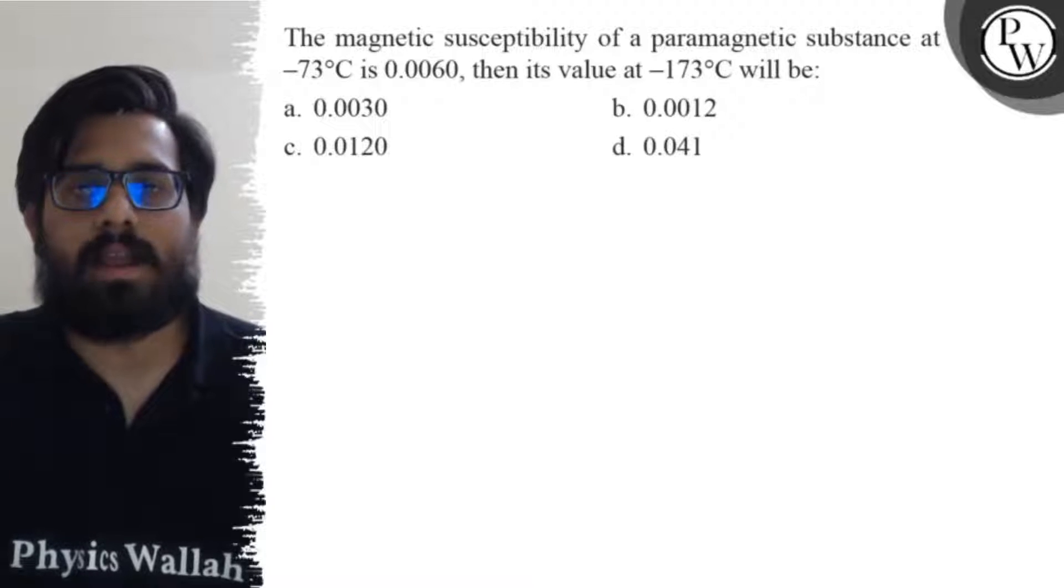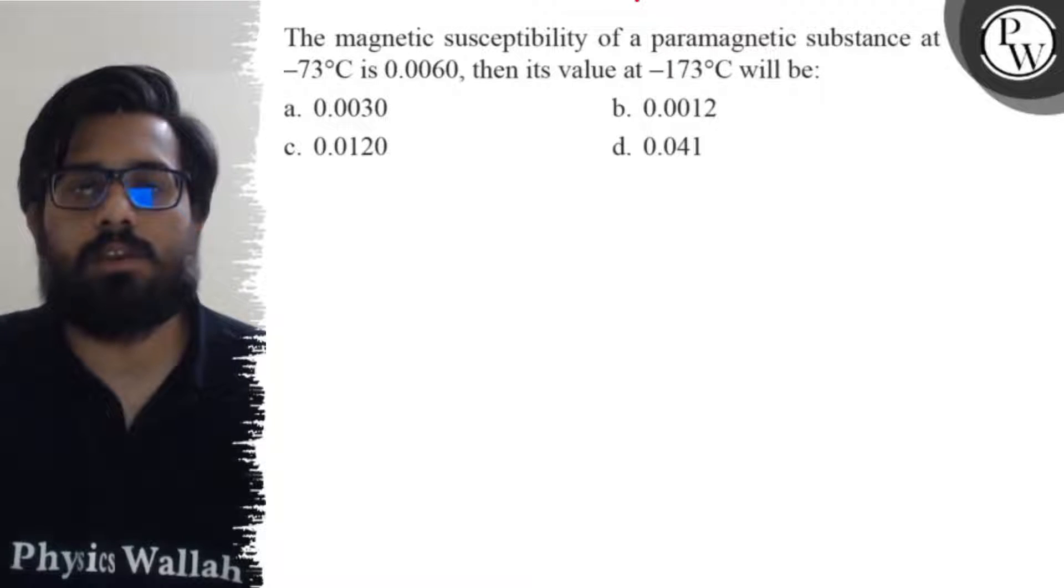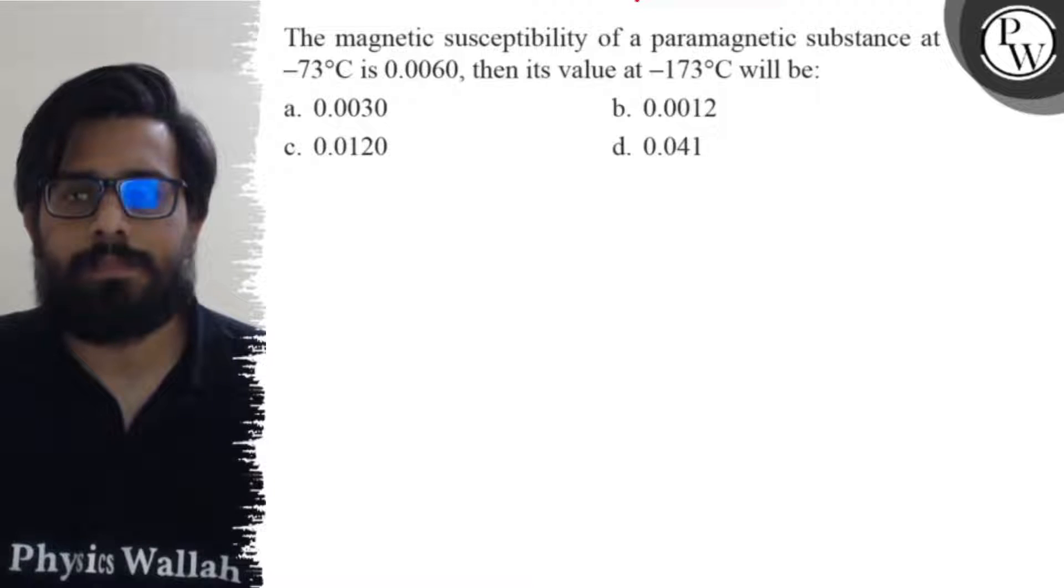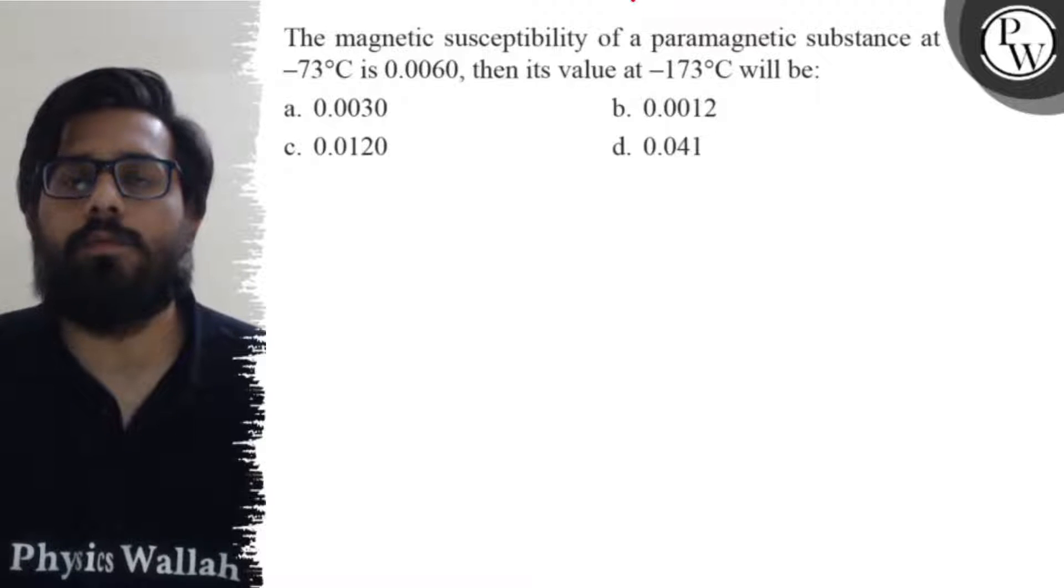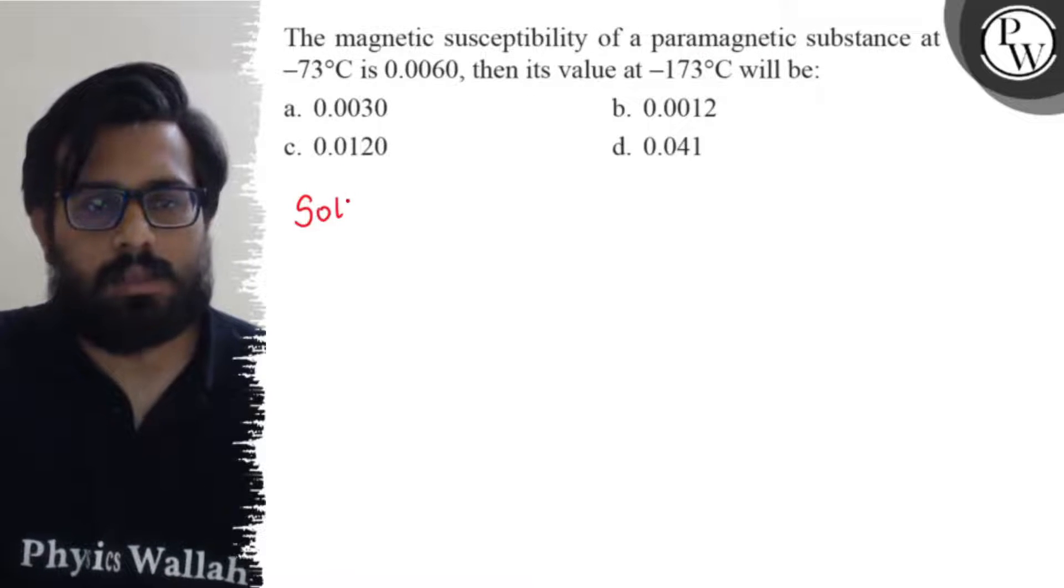Hello bachos, so let's see the question. The magnetic susceptibility of a paramagnetic substance at -73°C is 0.0060, then its value at -173°C will be: (a) 0.0030, (b) 0.0012, (c) 0.0120, and (d) 0.041. So here in this question we know for...